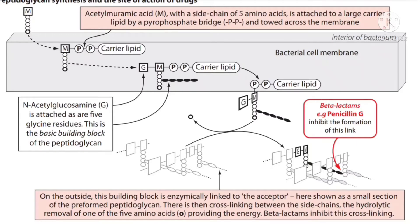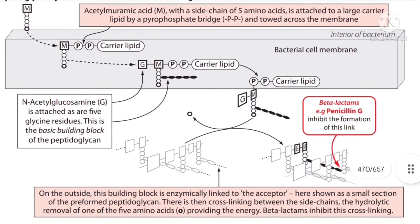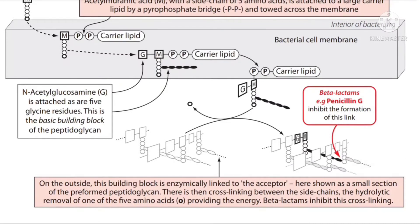N-acetylglucosamine (G) is attached along with 5 glycine residues, forming the basic building block of the peptidoglycan. Flucloxacillin, as a beta-lactam like penicillin G, inhibits peptidoglycan synthesis by inhibiting the formation of this link on the outside. The building block is enzymatically linked to the acceptor — shown as a small section of preformed peptidoglycan — and then cross-linking occurs between the side chains, with hydrolytic removal of one of the 5 amino acids providing the energy. Beta-lactams inhibit this cross-linking.